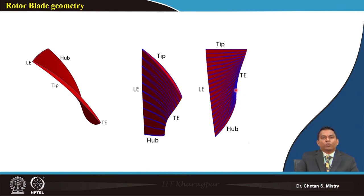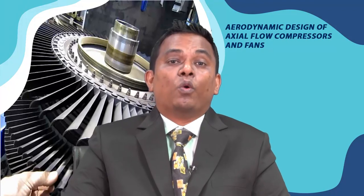Week 10 has been dedicated to the design of transonic compressors, covering detailed design methodology to build confidence for designing future axial flow compressors and fans of transonic nature. It is recommended to create your own design sheet, explore other configurations such as free vortex or different loading distributions, or vary axial velocity — these will give you the feeling of real design. Thank you very much.